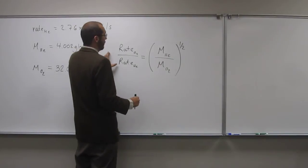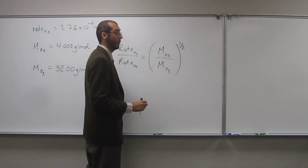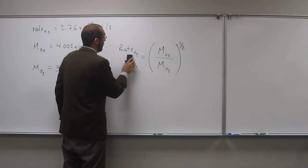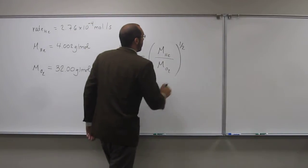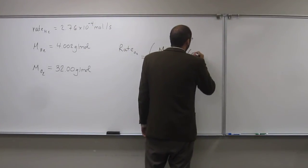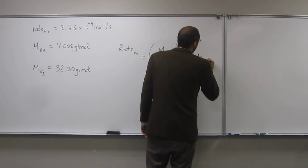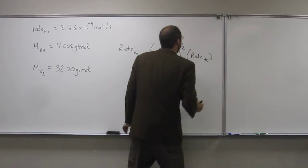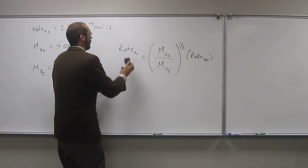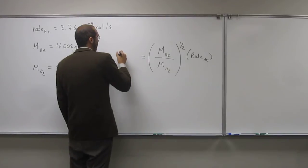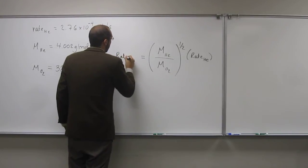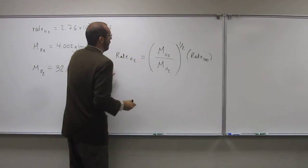So, let's rearrange this to isolate the rate of oxygen here. What are we going to do? Multiply both sides times the rate of helium. So, when we do that, we erase that there, and then multiply this, like that.